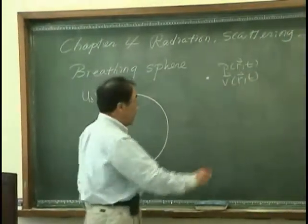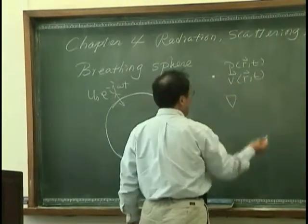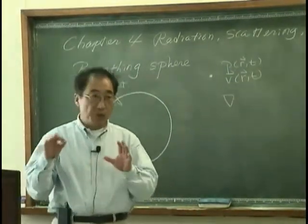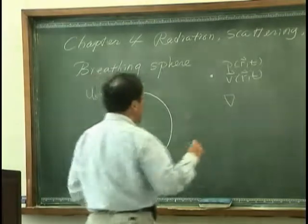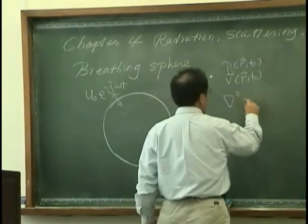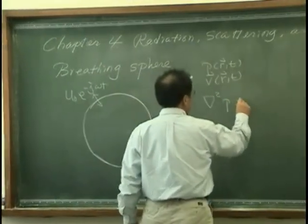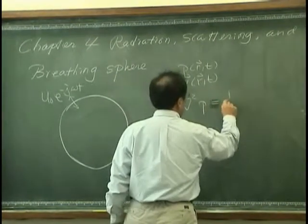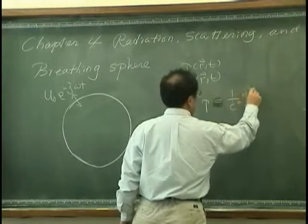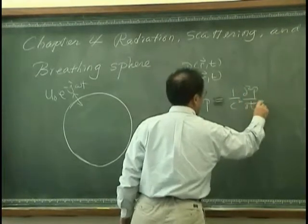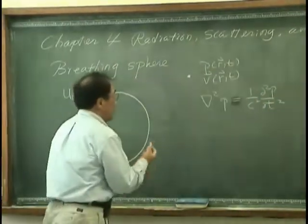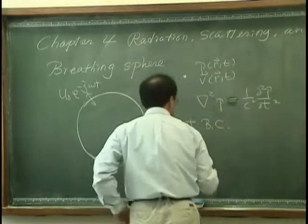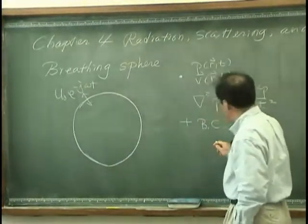Then the governing equation that determines the pressure and velocity would be linear. And the boundary condition can be written as...